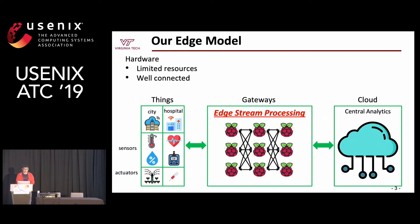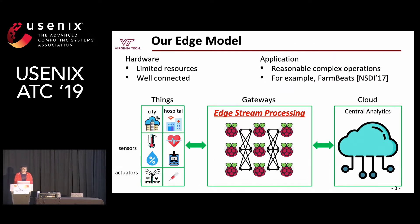The gateways should be well connected. For the application, the application should be reasonably complex. For example, FarmBeats from Microsoft uses the gateway to collect data from the sensors and produce a summary before sending it to the cloud, and also uses gateways to process time-sensitive local data at the edge.